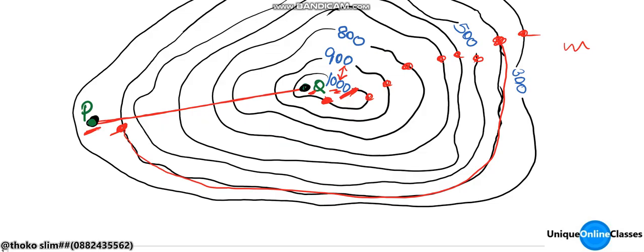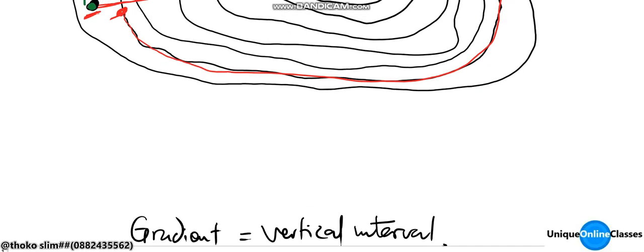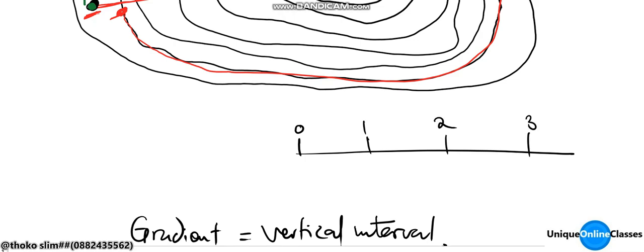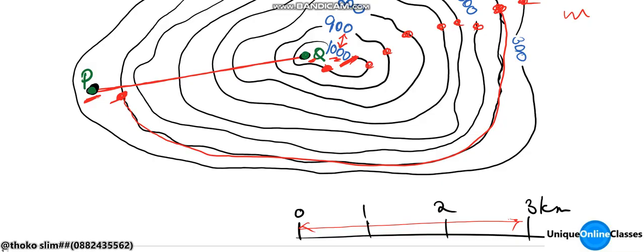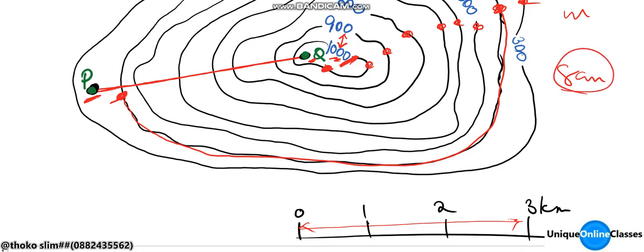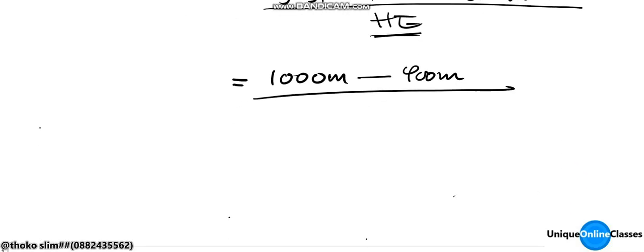To find the distance, you can use a ruler or a piece of string stretched along the route between the points, then compare it against the linear scale on the map. The linear scale usually shows values like 0, 1, 2, 3 kilometers. Let's assume the measured distance between P and Q on the map is 8 centimeters.